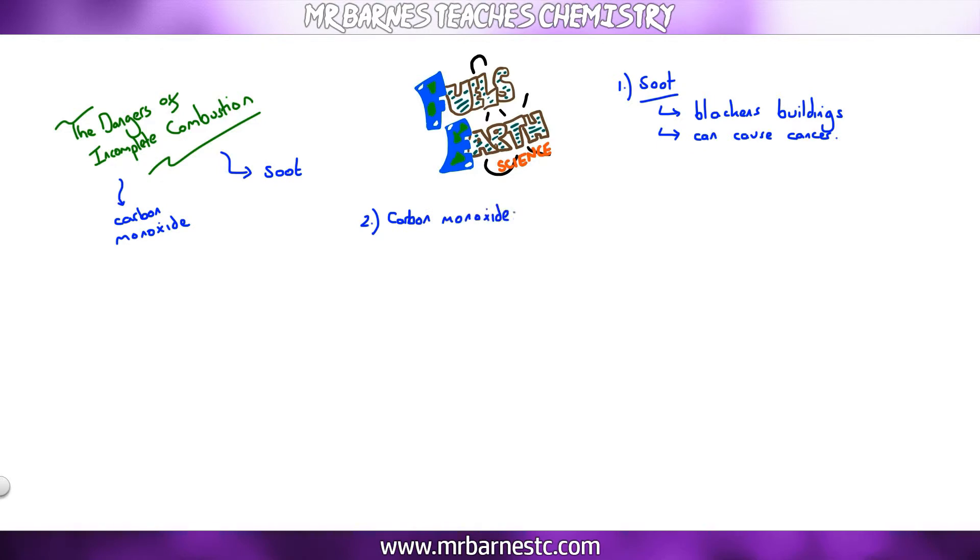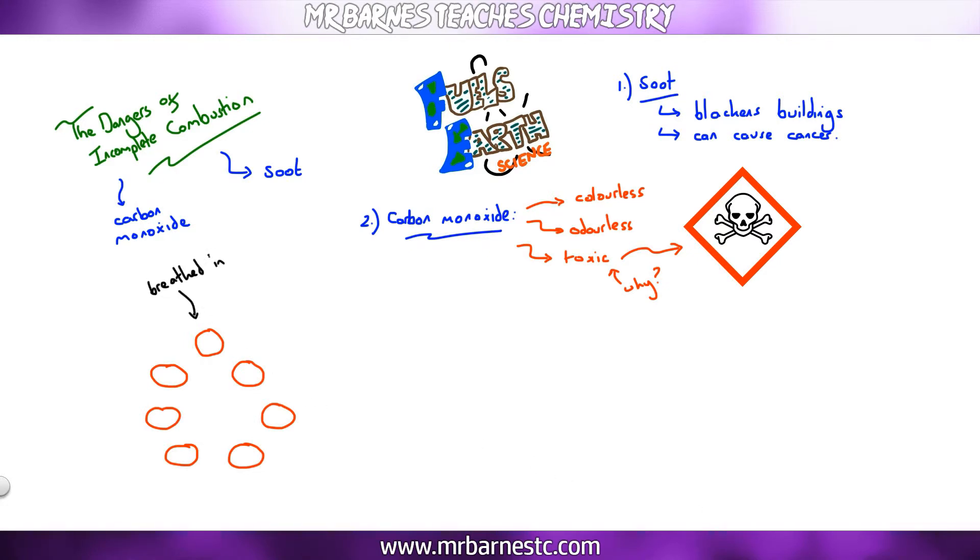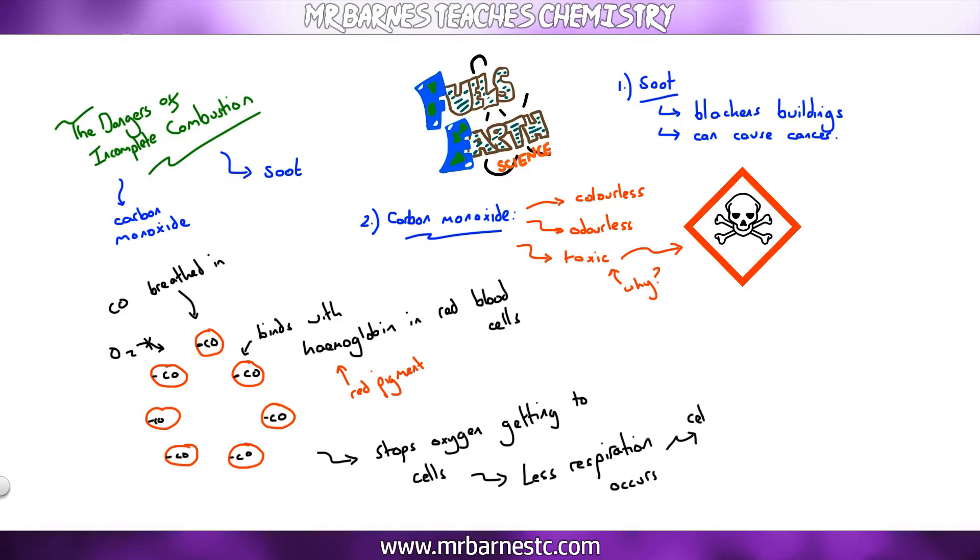The main thing you're going to be asked on, though, is carbon monoxide. The key thing is that carbon monoxide is colourless, so you can't see it. It's odourless, so you can't smell it. And it's toxic, which means it's poisonous. So if we have a look at some red blood cells, we breathe in normally, but if we breathe in carbon monoxide by mistake, carbon monoxide attaches itself to the red blood cells. In particular, it binds with the haemoglobin. The haemoglobin is a red pigment found in blood. Eventually, it'll get to the point where oxygen can't get in, or there'll be less oxygen in the blood. If the oxygen can't get to the cells, respiration can't occur. And respiration is how we get our energy. So our cells are going to have less energy. And if they have less energy, that can lead to headaches, tiredness, and eventually death.